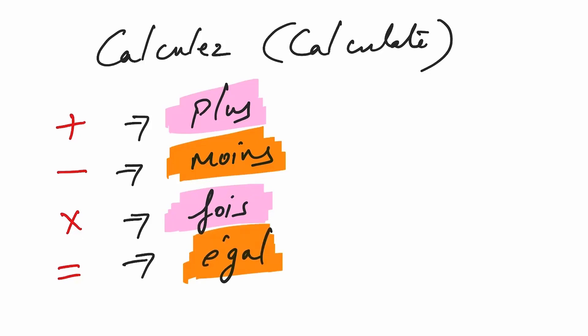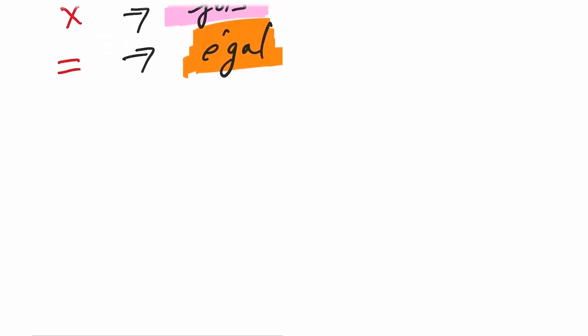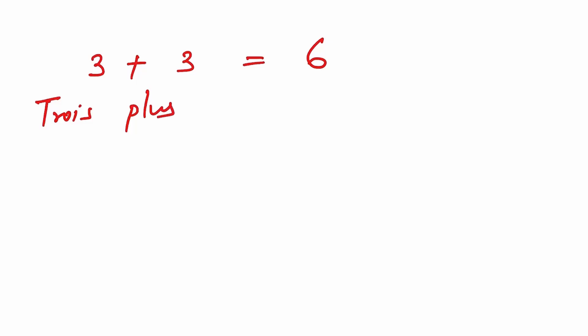So let's see some examples then it will be clear to you. Three plus three is equal to six, and in French: trois plus trois égale six.